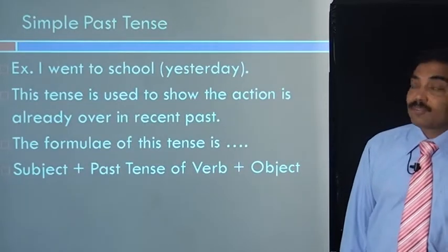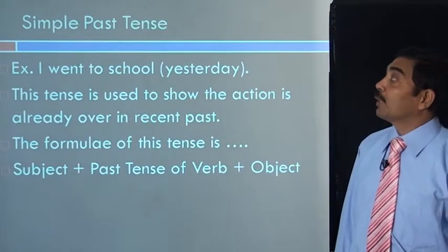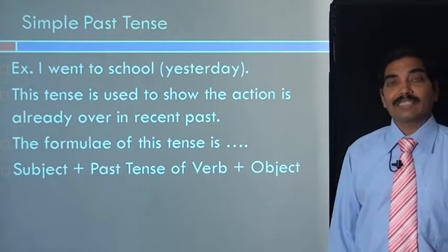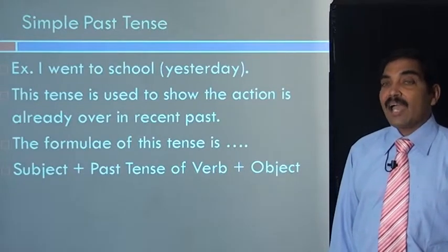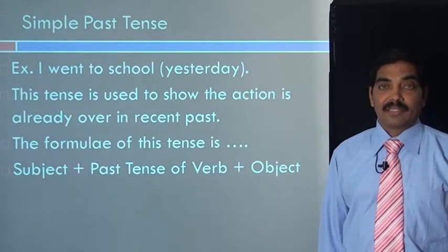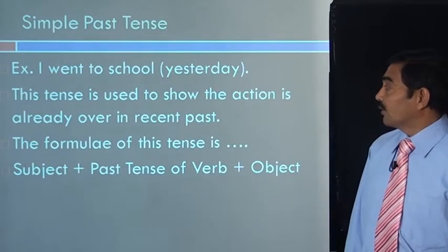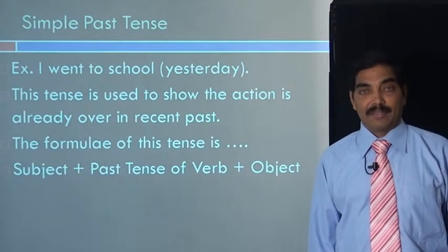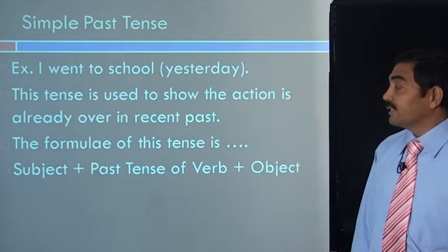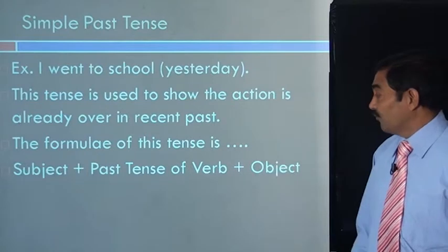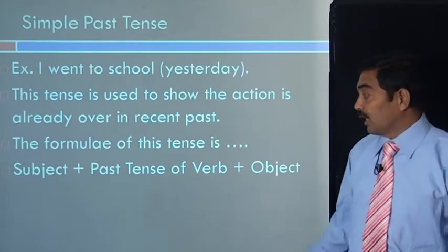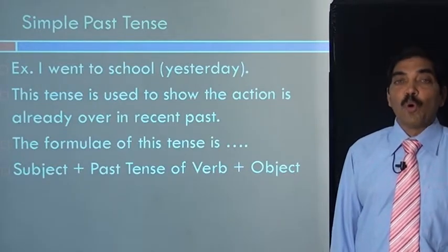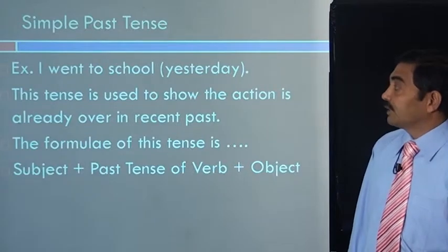Let us go to the fifth form of tense, that is simple past tense. The example is: I went to school. When I say I went to school, that means I went to school yesterday or the other day. This tense is used to show the action is already over in recent past. The formula of this tense is subject plus past tense of verb plus object. Here, past tense of verb is went — that is the past tense of go — subject is I and object is to school.